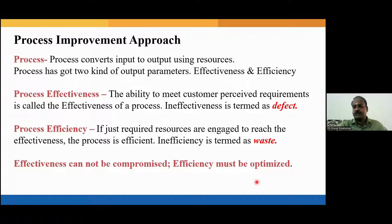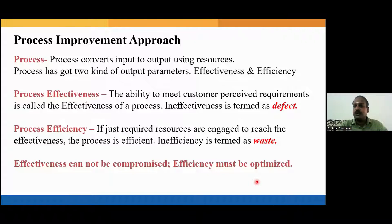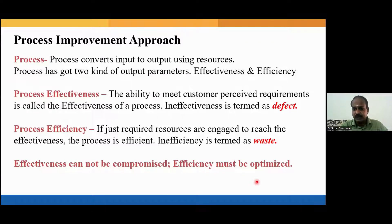Six Sigma ensures you produce defect-free products; Lean ensures your process is efficient. We take care of customer requirements through effectiveness, and business requirements through efficiency. In any business, effectiveness can never be compromised because customers cannot tolerate non-conformance, while efficiency must be optimized to maintain a good profit margin. That's why Six Sigma and Lean are most often integrated and deployed as a combined approach called Lean Six Sigma. Thank you.